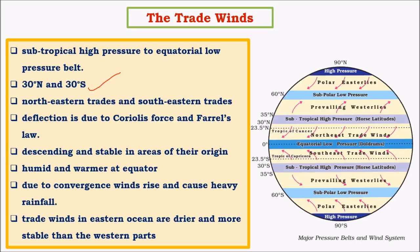There are two trade winds: one coming from the northern part and one from the southern part — both are easterlies. That is all about trade winds.